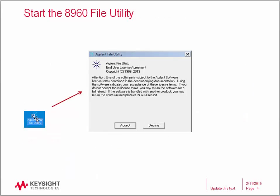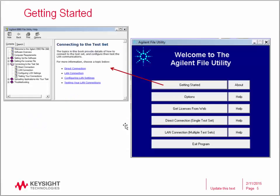Start the 8960 file utility by double clicking on the desktop icon. Accept the license agreement to proceed. Click on the Getting Started button to start the Help section and click on the Connecting to the Test Set link to see the procedure for setting up the LAN connection between the PC and the E5515C.